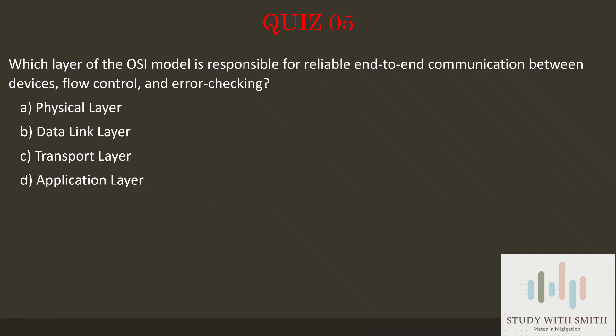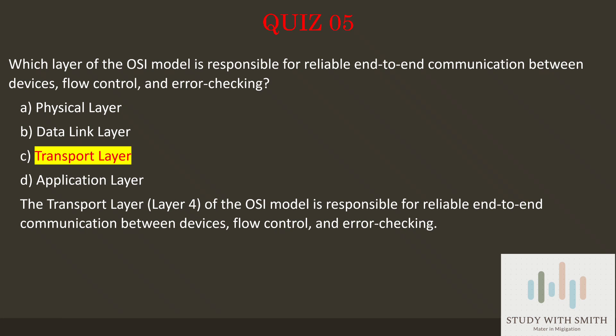Question 5: Which layer of the OSI model is responsible for reliable end-to-end communication between devices, flow control, and error checking? Pause the video now to select the best answer. The answer is C — Transport Layer. The transport layer, Layer 4, of the OSI model is responsible for reliable end-to-end communication between devices, flow control, and error checking.